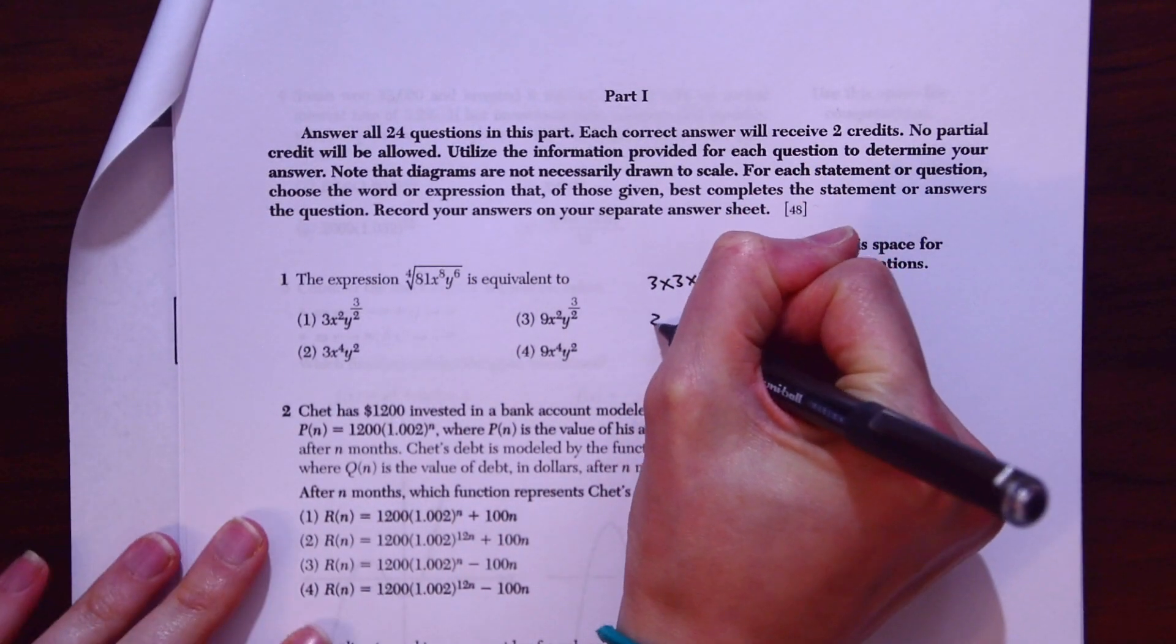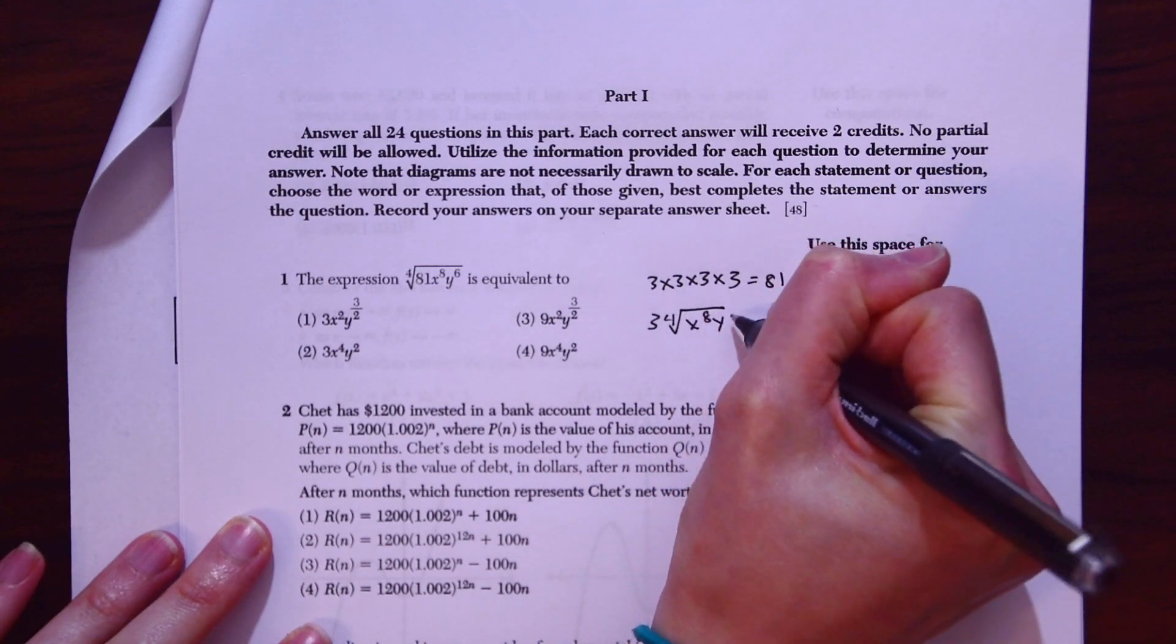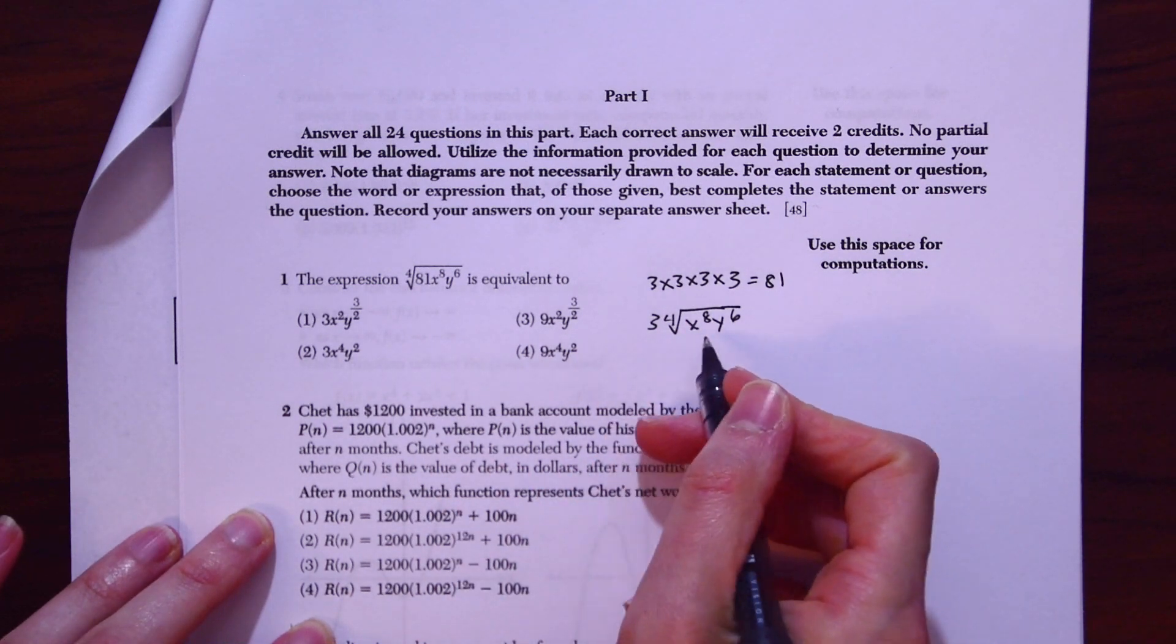So now we're left with 3 and then the quad root of x to the 8th and y to the 6th. So now we have these variables with exponents right here.